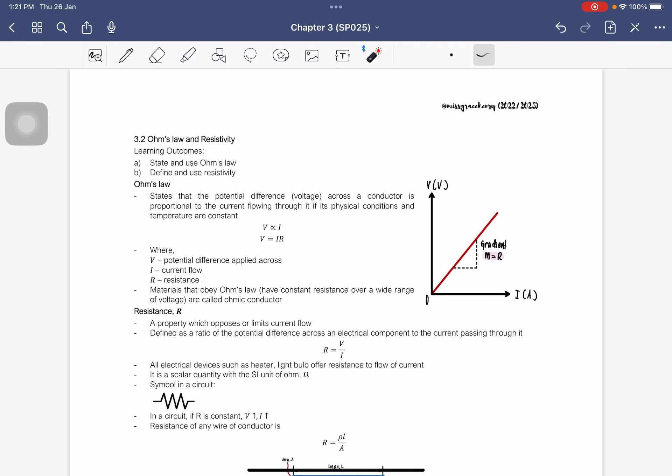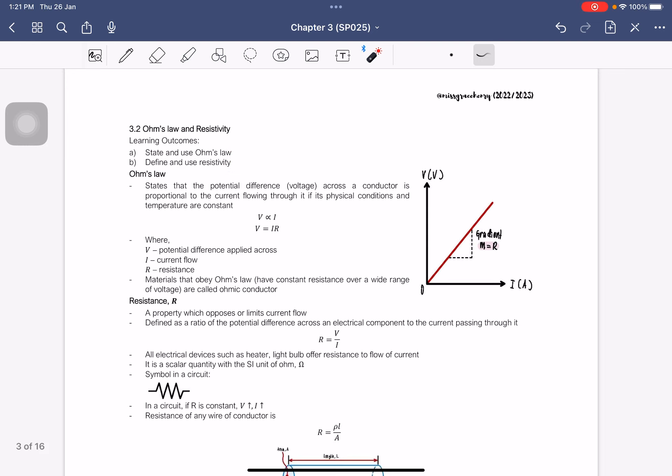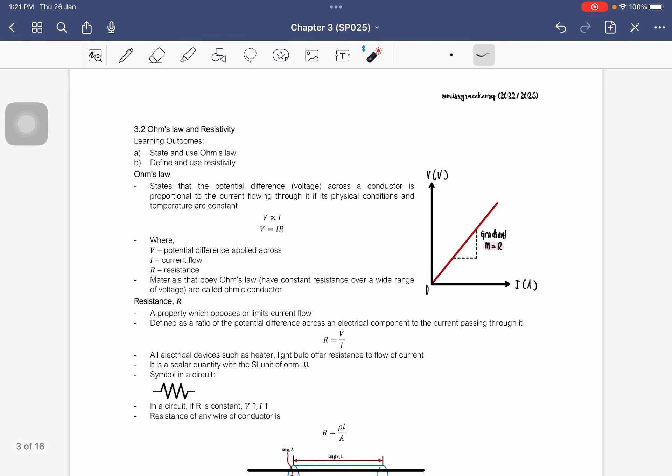So Ohm's law is the experiment that you did last week. Ohm's law states that the potential difference across a conductor is proportional to the current flowing through it if its physical conditions and temperature are constant. So if temperature is not constant, Ohm's law cannot be applied. They don't follow Ohm's law if the temperature is not constant and the physical conditions are not constant.